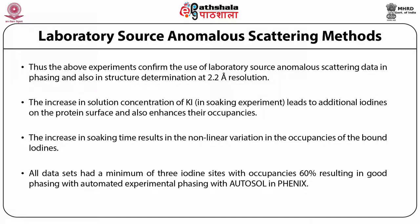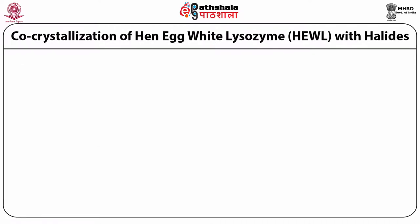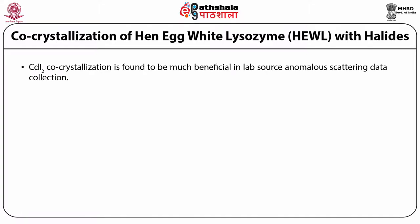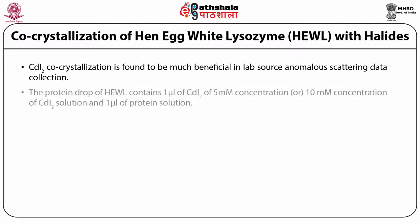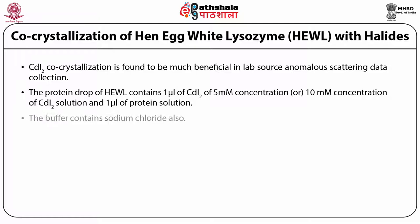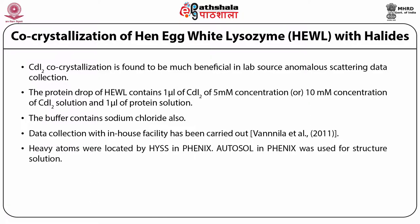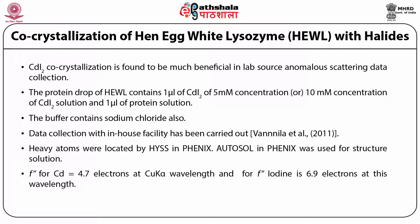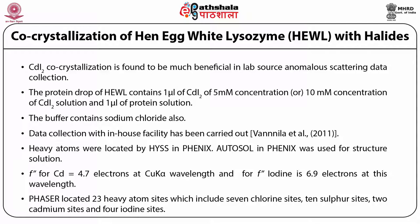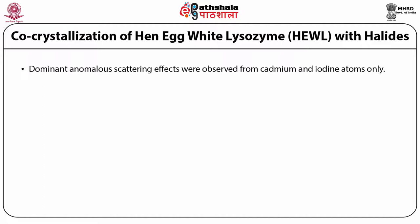All data sets had a minimum of 3 iodine sites with occupancy of 60%, resulting in good phasing with automatic experimental phasing using AUTOSOL in PHENIX. We also carried out co-crystallization of hen egg white lysozyme with halides. Cadmium iodide co-crystallization was found to be much beneficial in lab source anomalous scattering data collection. The protein drop contains 1 microliter of cadmium iodide at 5 millimolar or 10 millimolar concentration and 1 microliter of protein solution. The buffer also contains sodium chloride. Heavy atoms were located by HySS in PHENIX, and AUTOSOL in PHENIX was used for structure solution. The imaginary component F double prime from cadmium equals 4.7 electrons at copper K-alpha wavelength, and for iodine it is 6.9 electrons. PHASER located 23 heavy atom sites: 7 chlorine atoms, 10 sulfur sites, 2 cadmium sites, and 4 iodine sites.